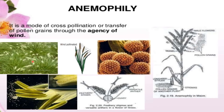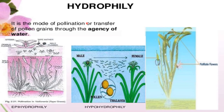Characteristics of anemophily: flowers are colorless, odorless, and nectarless. Pollen grains are light, small, winged or dusty, dry, smooth, non-sticky, and unwettable. Stigma is hairy, feathery, or branched to catch wind-borne pollen grains. Pollen grains are produced in very large numbers.